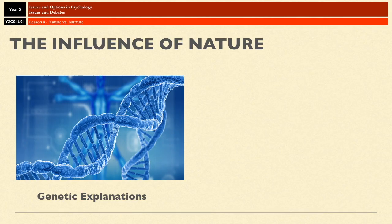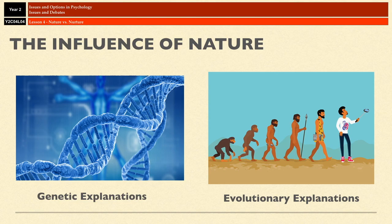The greater similarity among individuals who share the same genes shows that nature makes a major contribution to the disorder. 40% isn't huge, but it is definitely more than 7%, and so genetic explanations would suggest there is a genetic basis for conditions like schizophrenia. Nature also uses evolutionary explanations — natural selection means any behaviour or trait that promotes survival and reproduction will be naturally selected, with genes for such behaviours passed on to subsequent generations.